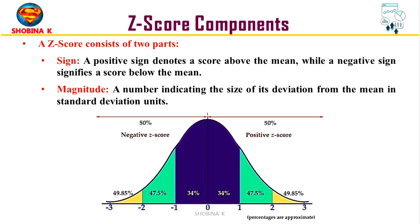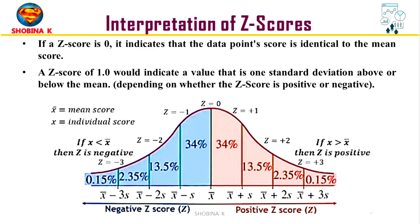Therefore, a larger magnitude implies a more substantial deviation from the mean, which means the data point is farther away from the average in the distribution. If the z-score is zero, it indicates the data point's score is exactly at the mean of the distribution — in other words, the data point is at the average position within the data set.